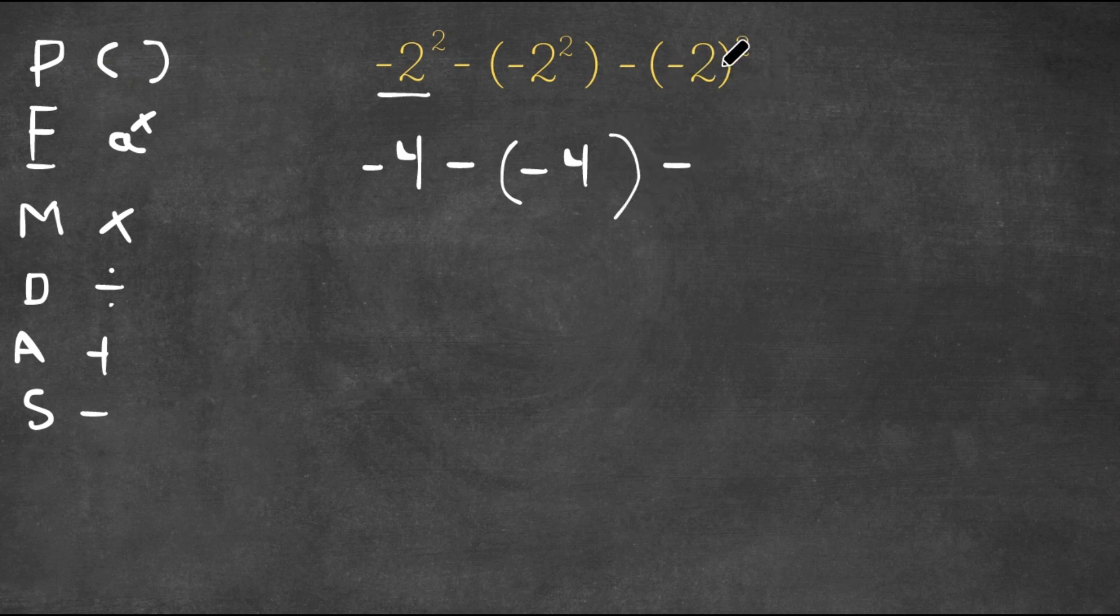Now we have (-2)². And well, remember, both 2² and (-2)² are both equal to positive 4. So now this would equal 4.